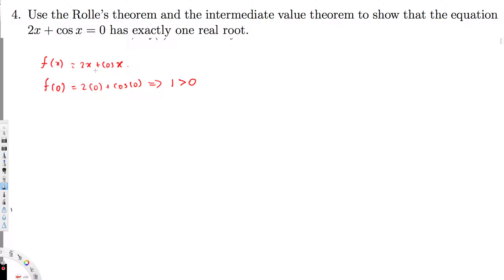Now I need to find a value below zero. Let's take x = -1. f(-1) = 2 times (-1) plus cos(-1). This gives us -2 plus cos(-1). Since cos(-1) is not zero — it's a value less than 1 — and -2 dominates, this is a negative value. So f(-1) is below zero.